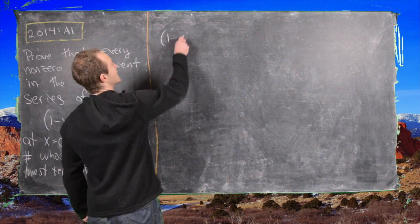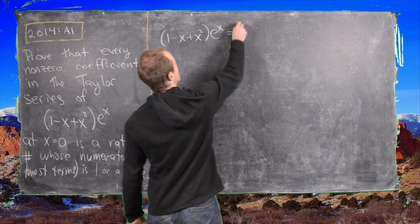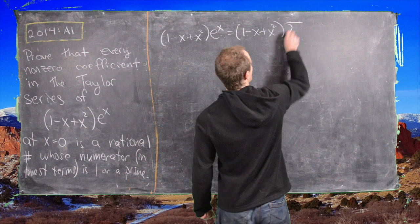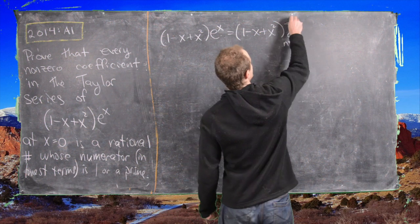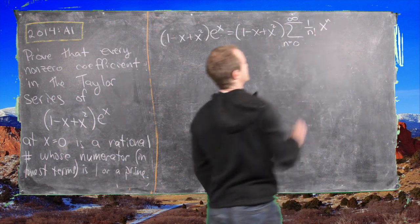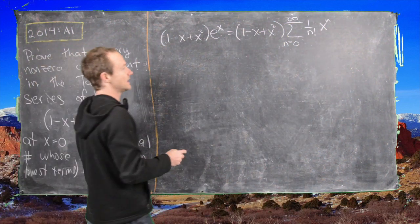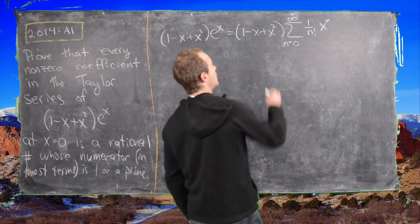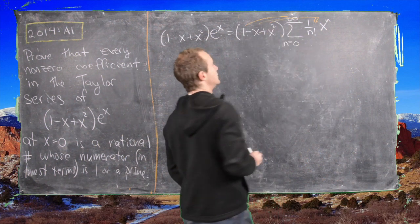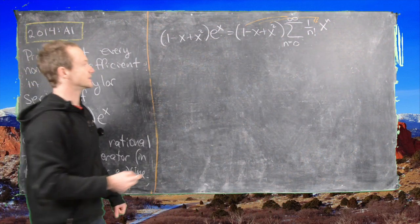So we'll take (1 - x + x²) times e to the x, and write that as (1 - x + x²) times the sum from n equals 0 to infinity of 1 over n factorial times x to the n. That's the Taylor series for e to the x. Now the next thing we'll do is distribute all of these terms into the series and break that apart into three series.